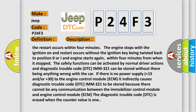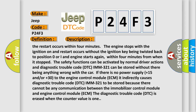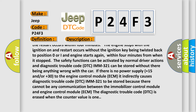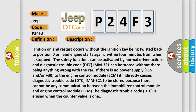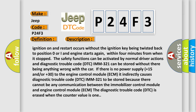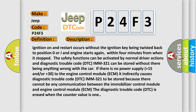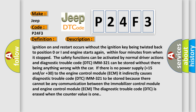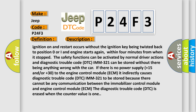If there is no power supply (plus 15 and/or plus 30) to the engine control module ECM, it indirectly causes diagnostic trouble code DTC IMM 321 to be stored, because there cannot be any communication between the immobilizer control module and engine control module ECM. The diagnostic trouble code DTC is erased when the counter value is 1.